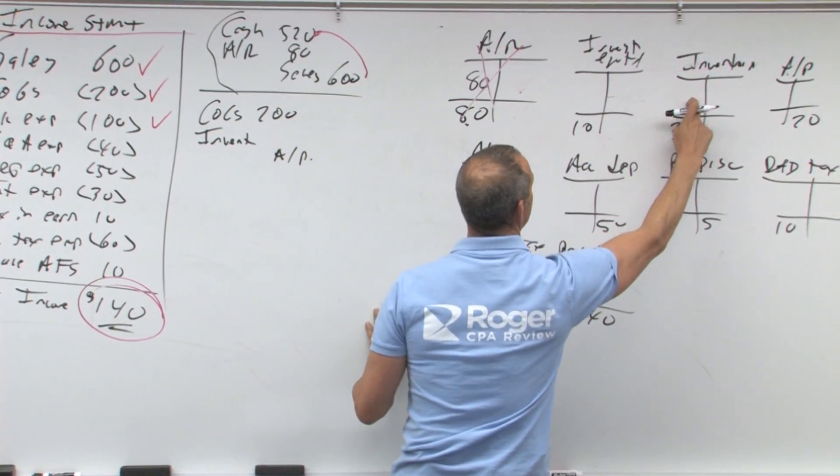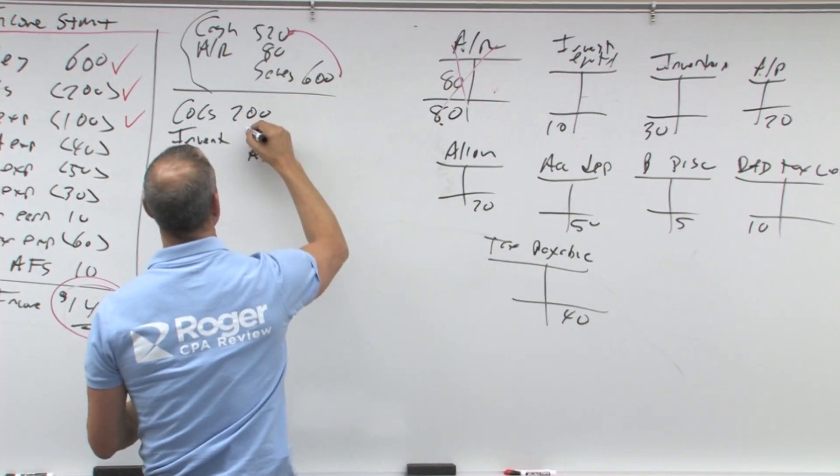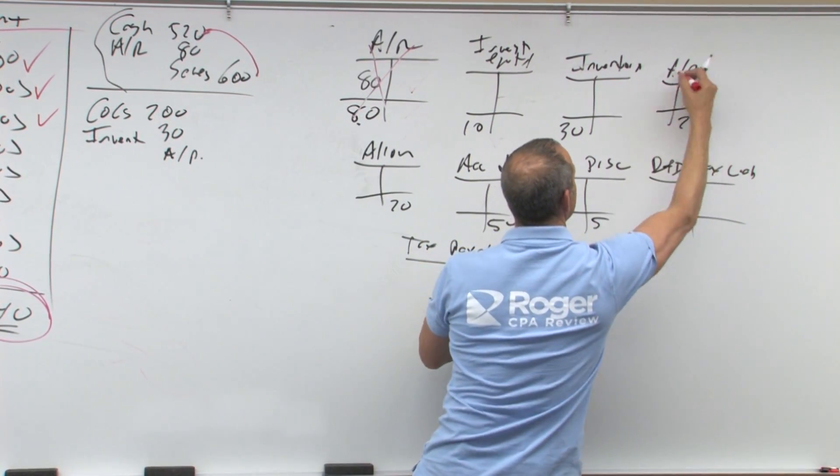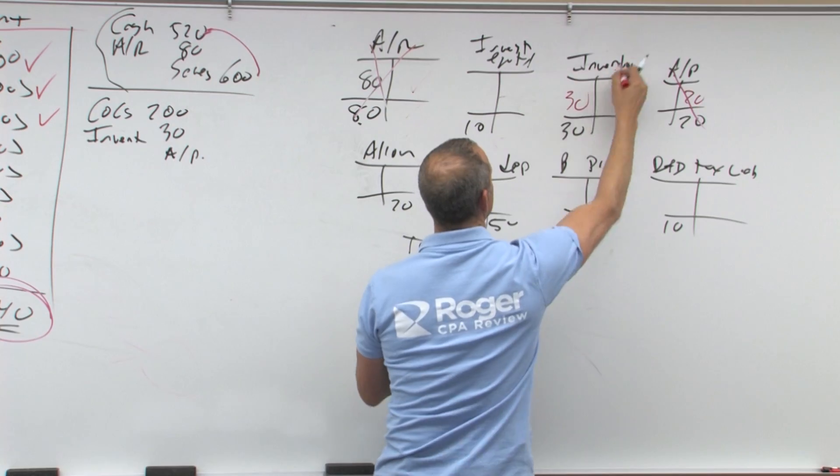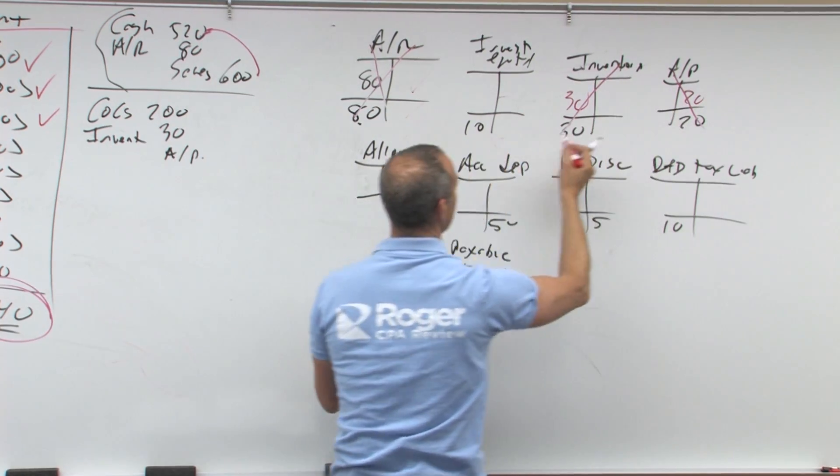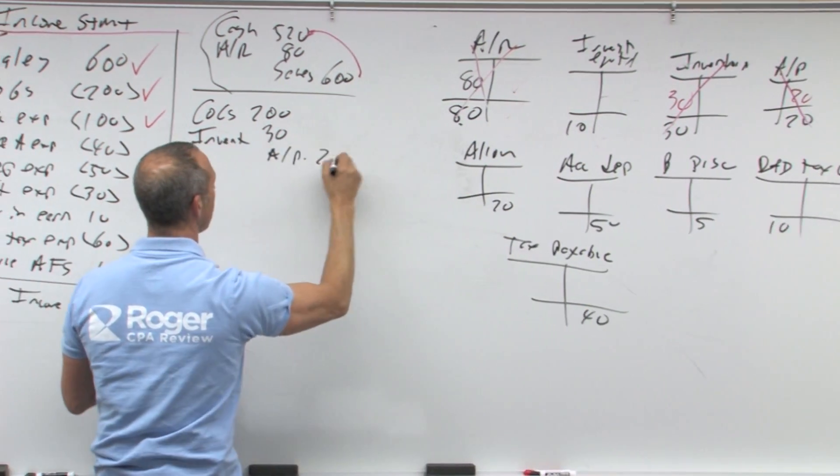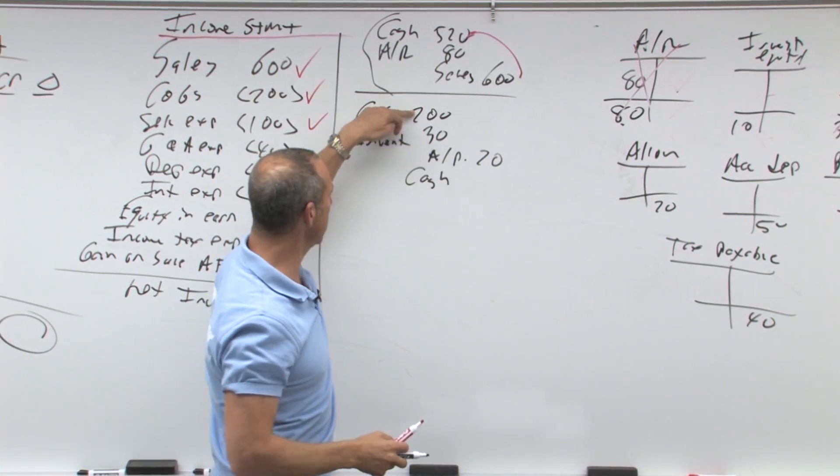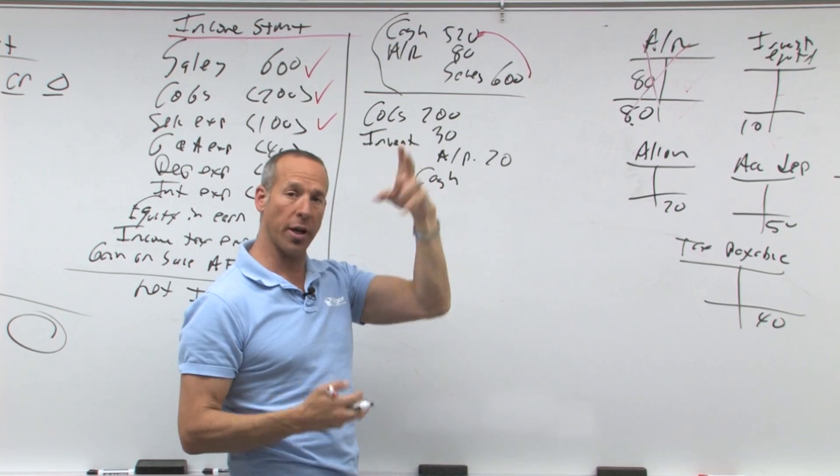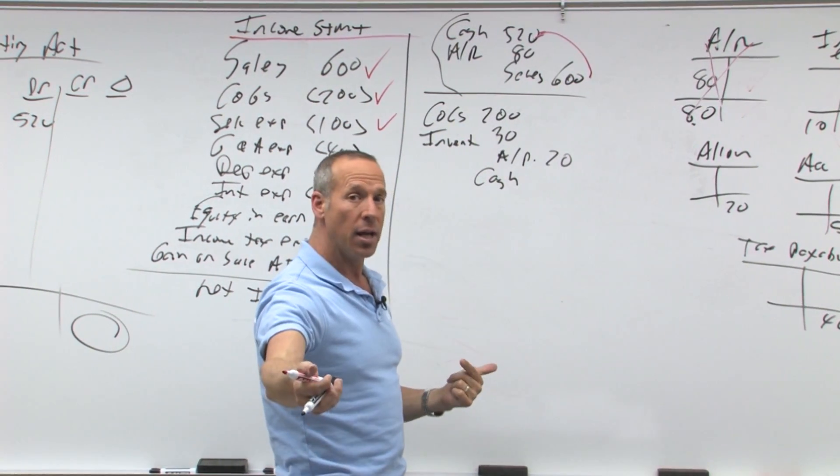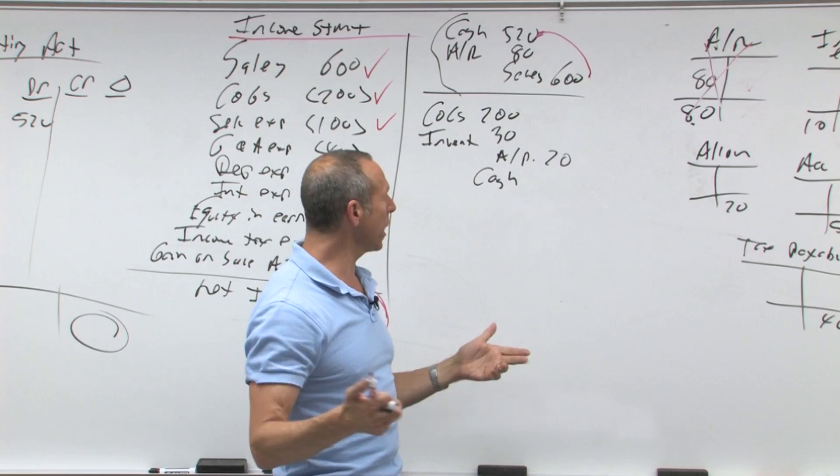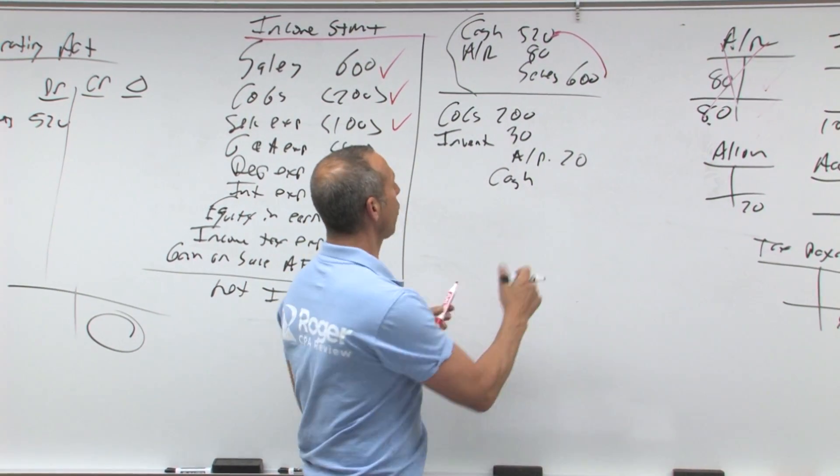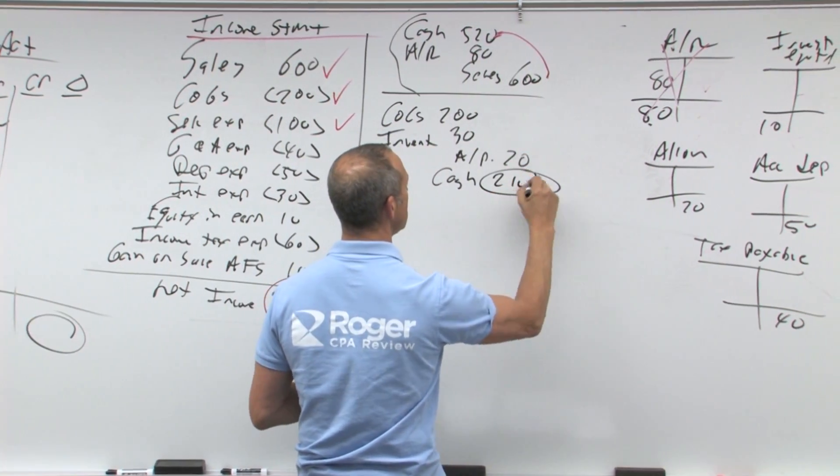So what happened? Inventory went up by 30, that's a debit here. Accounts payable went up by 20, so I'll put a credit here. Both of those are accounted for. So I come over here, payable's 20, the difference must be cash. Let's think about it. I sold 200, inventory went up by 30, so I must have spent 230. But for the stuff I bought of 230, I didn't pay for 20 of it, because liabilities went up by 20, therefore I must have only paid 210.